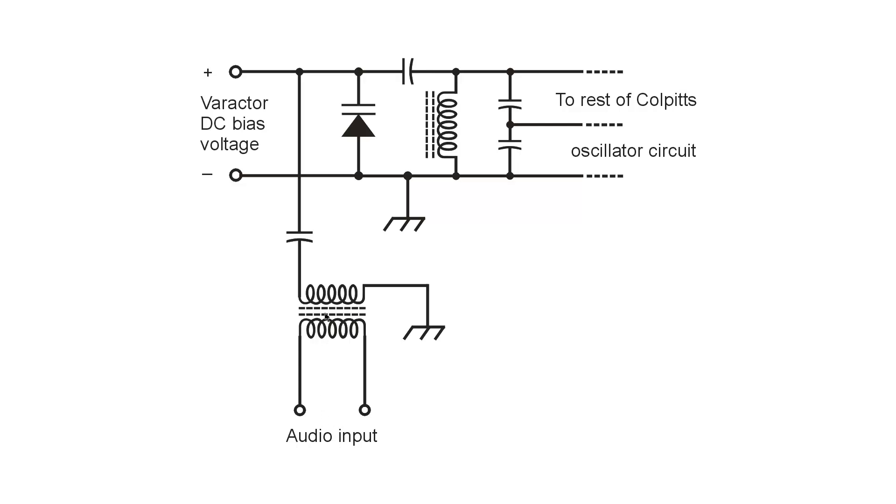Frequency modulation can be obtained by applying an audio signal right here to a transformer, which basically isolates the microphone from the rest of the circuit.